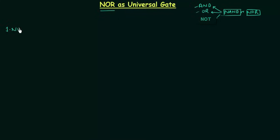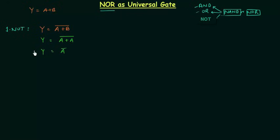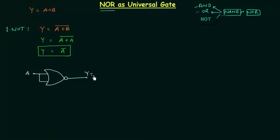First, I will implement the NOT gate using the NOR gate. For a two-input NOR gate, output Y equals (A OR B) complement. If we provide two similar inputs, then output Y equals (A OR A) complement, which simplifies to A complement. So the NOR gate operates as a NOT gate when we provide the same input to both terminals. The implementation uses one NOR gate with input A on both inputs, giving output Y equal to A complement.